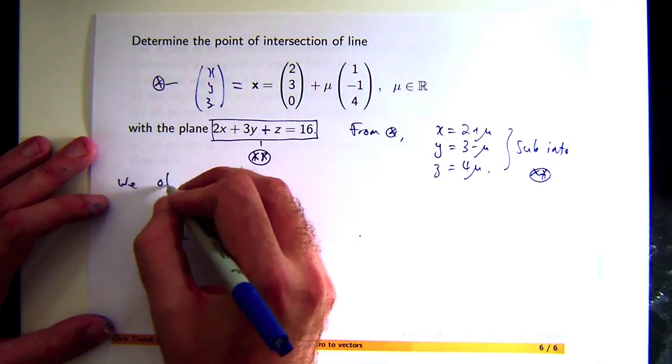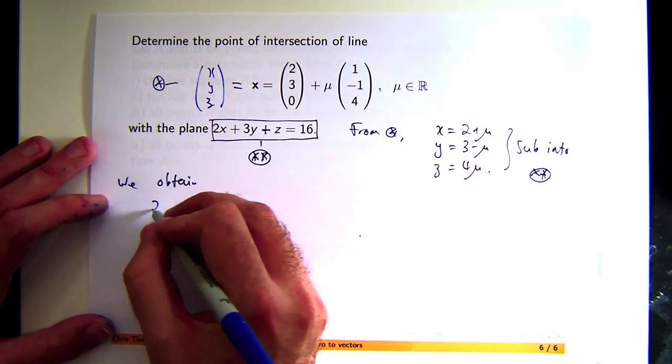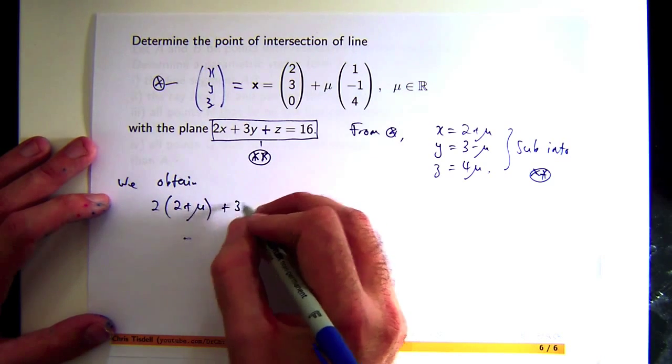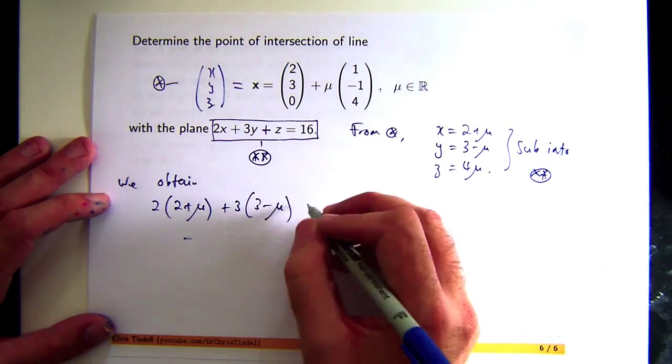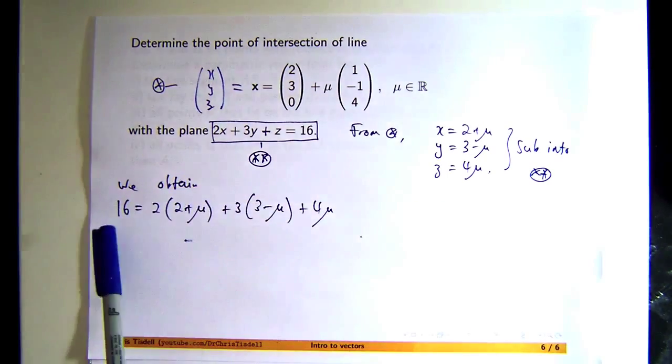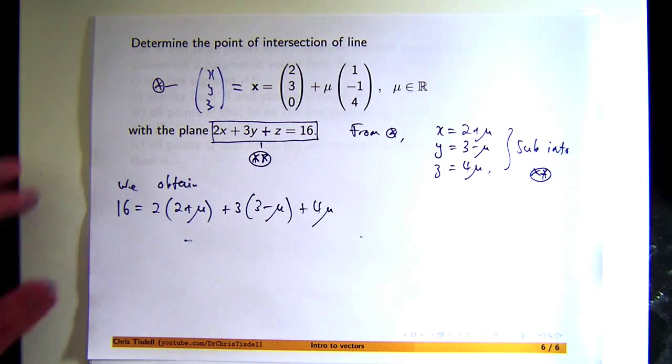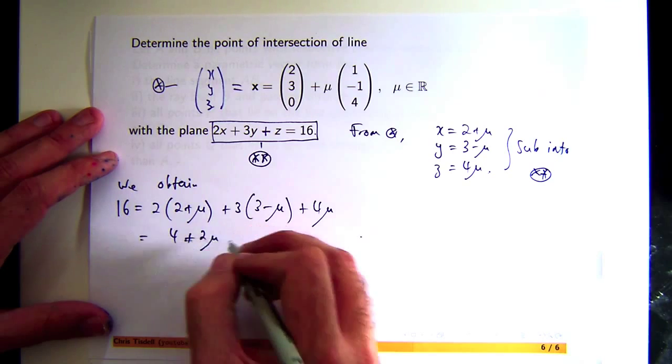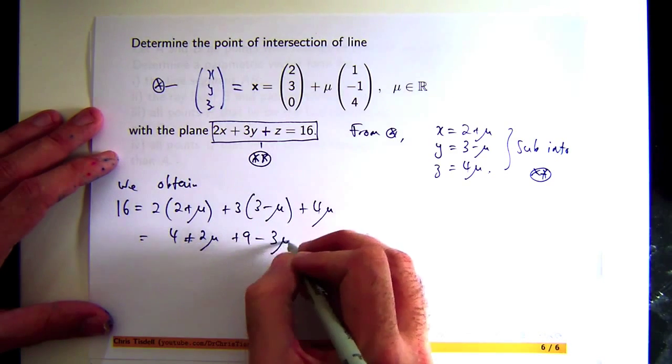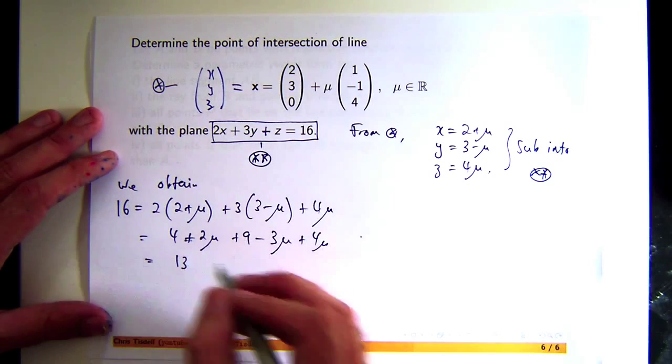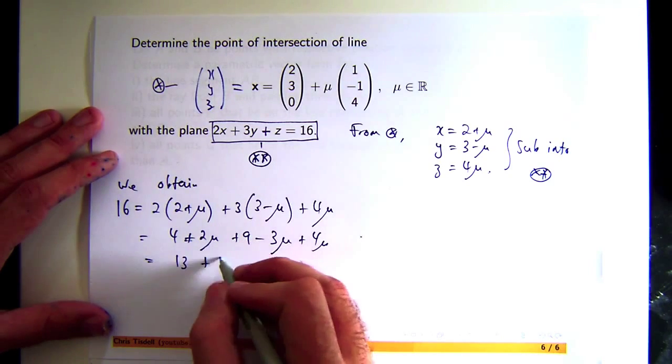We obtain two times two plus mu, plus three times three minus mu, plus four mu. Let's put the 16 over here because I'm going to play around with that. So if I expand this I'm going to get four plus two mu, plus nine minus three mu, plus four mu. So I'm going to have 13 plus three mu, is that looking good?